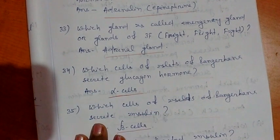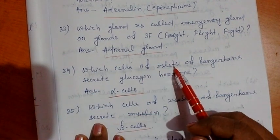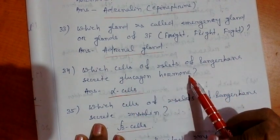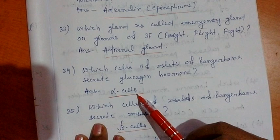Now question number 34. Which cells of islets of Langerhans secrete glucagon hormone? Answer is alpha cells.